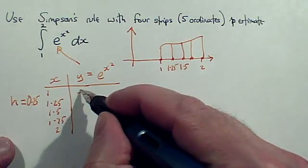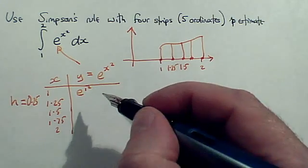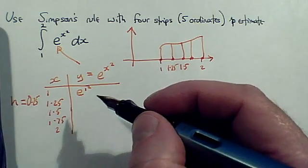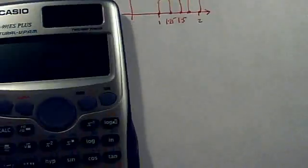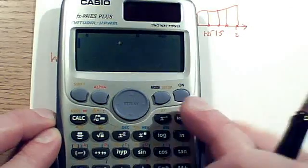So for the first one, it's e to the power 1 squared, which is e to the power of 1, which is just e. But after that, it probably is easier to work in decimals rather than in exact values. And in fact, the tidiest way to do that work is to use the table mode on your calculator.